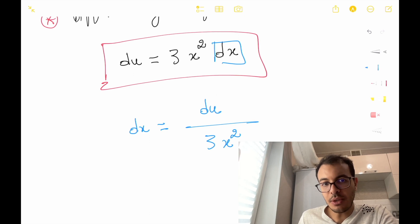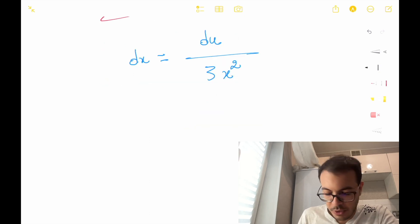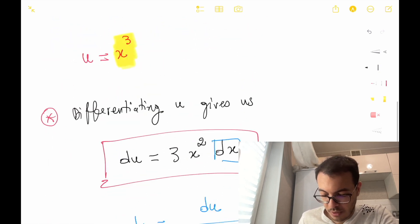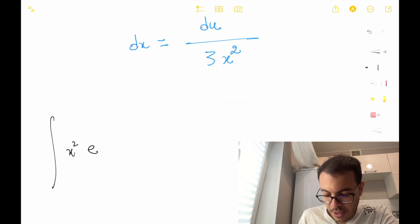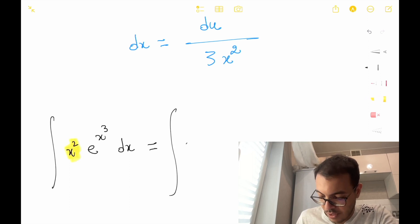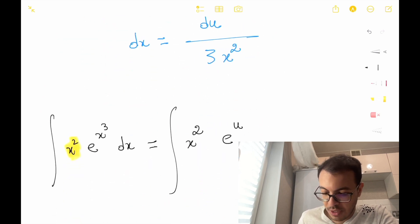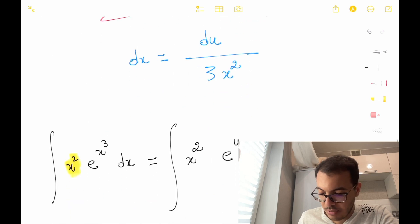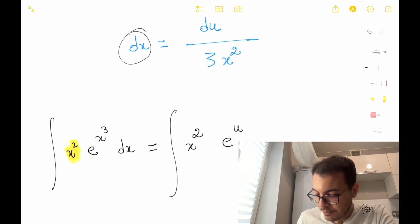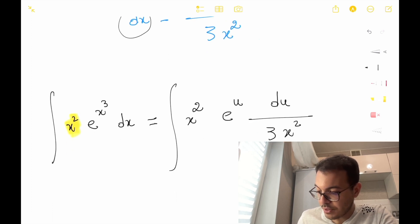If we rewrite the integral in terms of u, the integral of x squared times e to x cubed dx becomes x squared e to u, because u is x cubed, and we can replace dx by du over 3x squared.